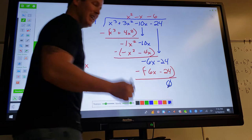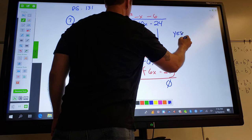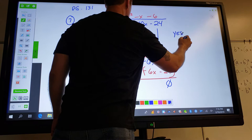If the remainder is zero, then yes, you can say yes, x plus four is a factor. And please allow me to write this out. And that, my friends, is how you do number seven through ten.